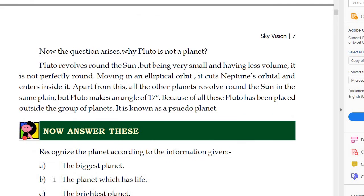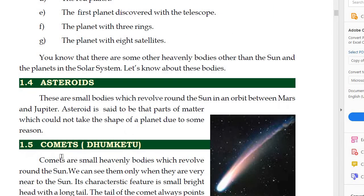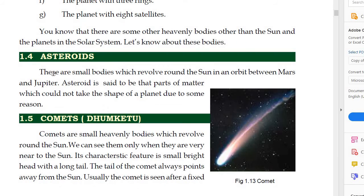Now the chapter we have completed — asteroids are left. Asteroids are small bodies which revolve round the sun in an orbit between Mars and Jupiter. Asteroids are said to be that part of matter which could not take the shape of a planet due to some reason, but revolve between Mars and Jupiter just as planets do. We call these asteroids.